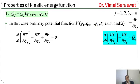Since V is a function of only position and time, ∂V/∂qj_dot = 0.